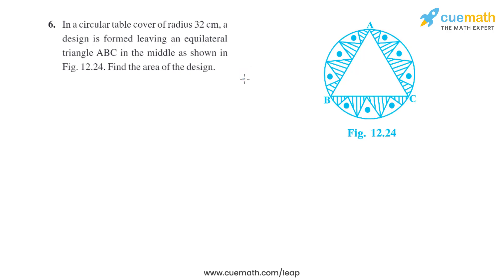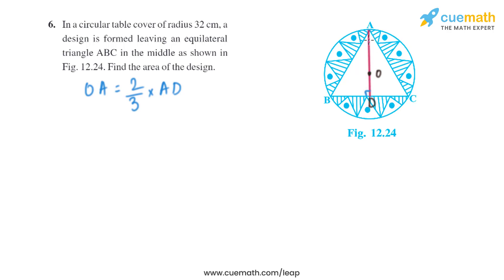To find the area of the equilateral triangle, we need the side length. Let's draw median AD of triangle ABC, where O is the center of the circle. From here, OA equals 2/3 of AD, since AD is the median and the centroid divides it in the ratio 2:1, meaning AO is 2 parts and AD is 3 parts.